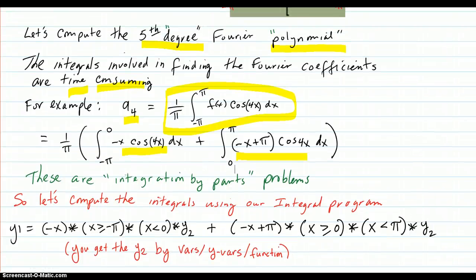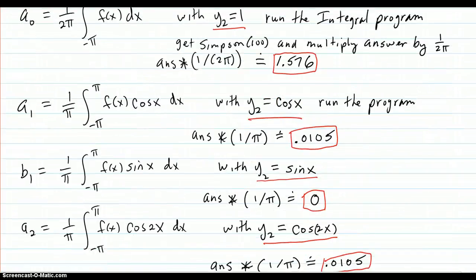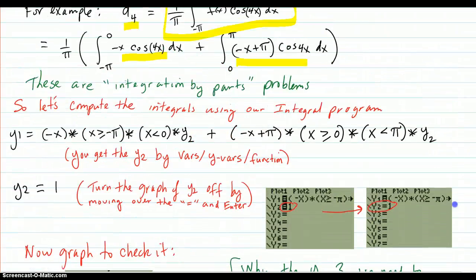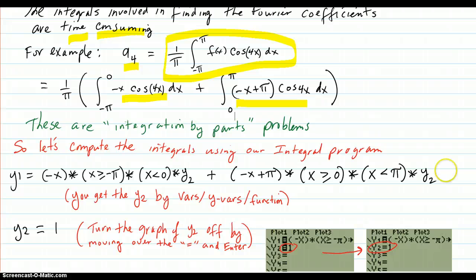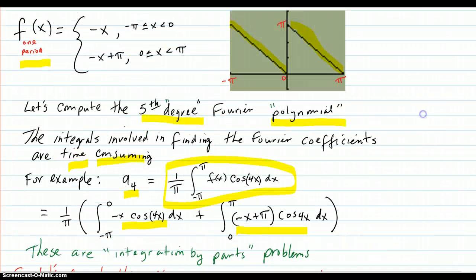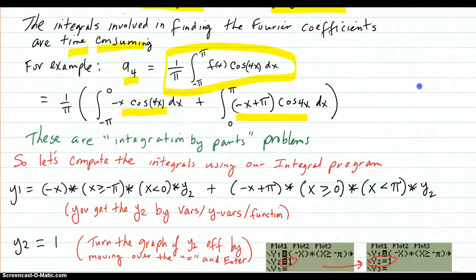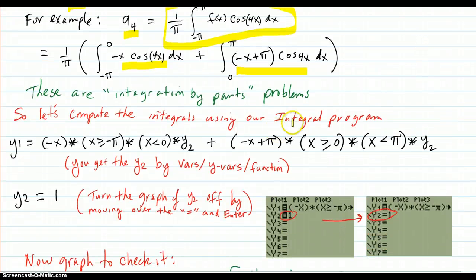Because you're going to have to do, for a fifth degree, you got ten things to compute plus the original a0. So if we want to get somewhere with our music examples, we're going to have to figure out these integrals some other way, then by hand. And we're going to use our integral program in our calculator.